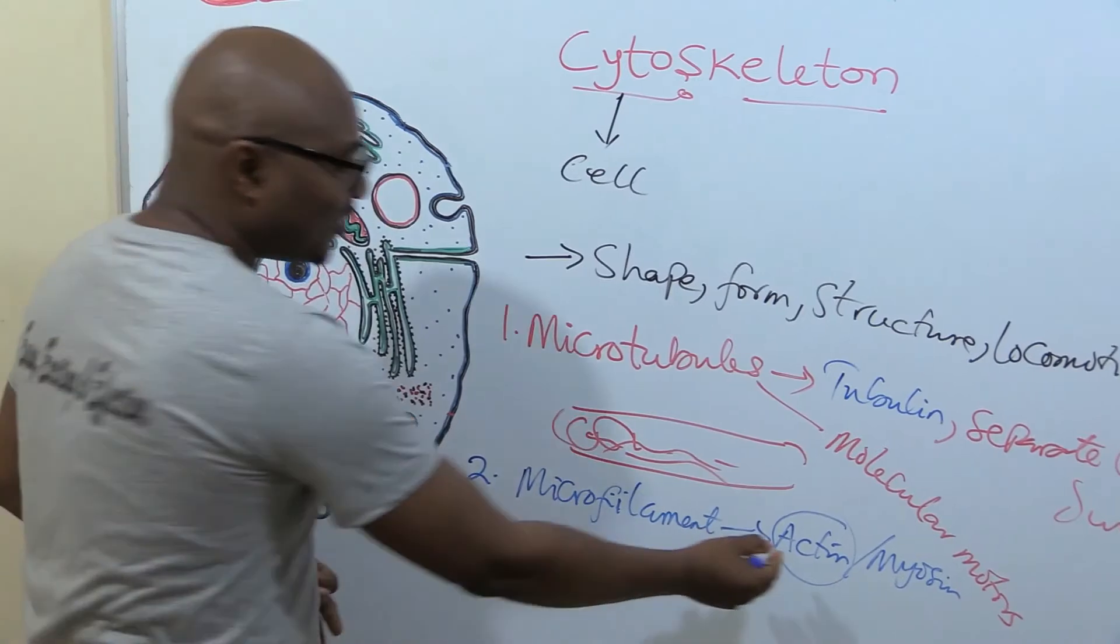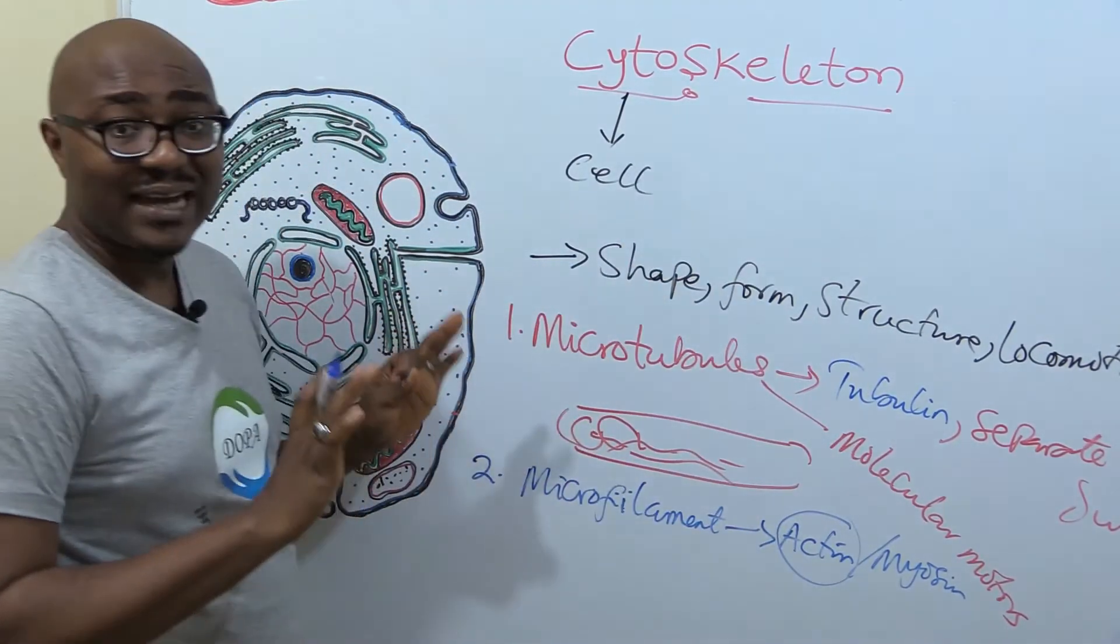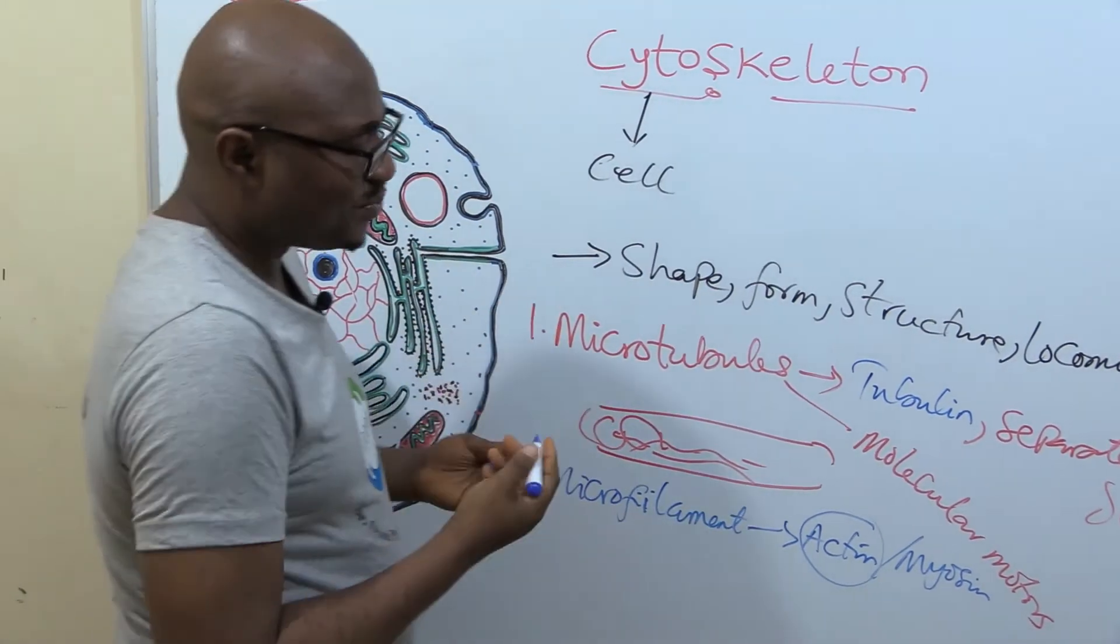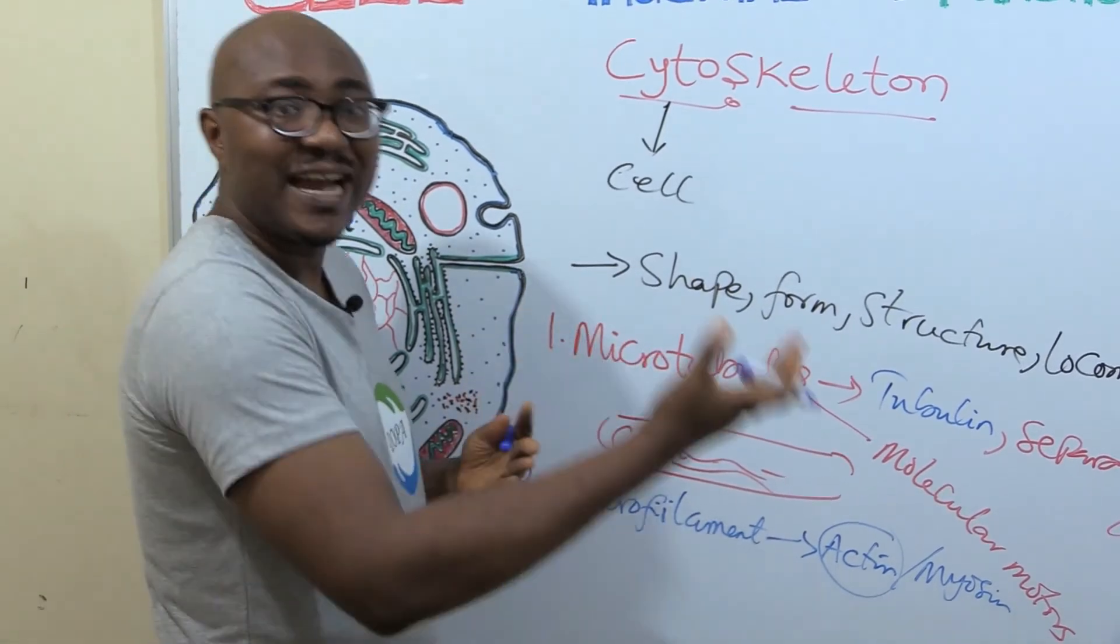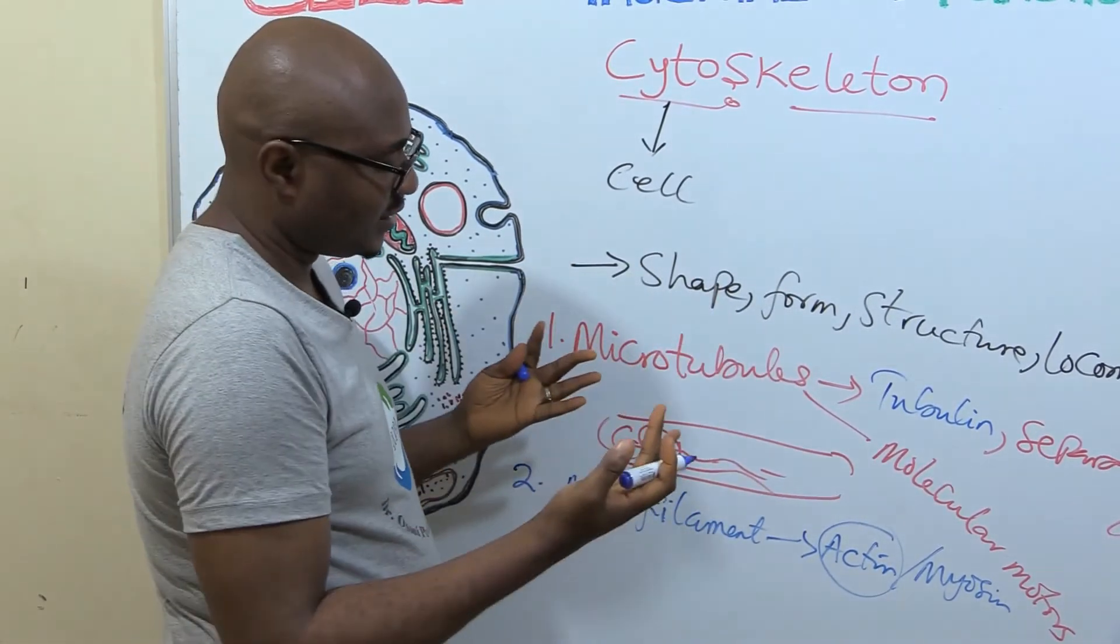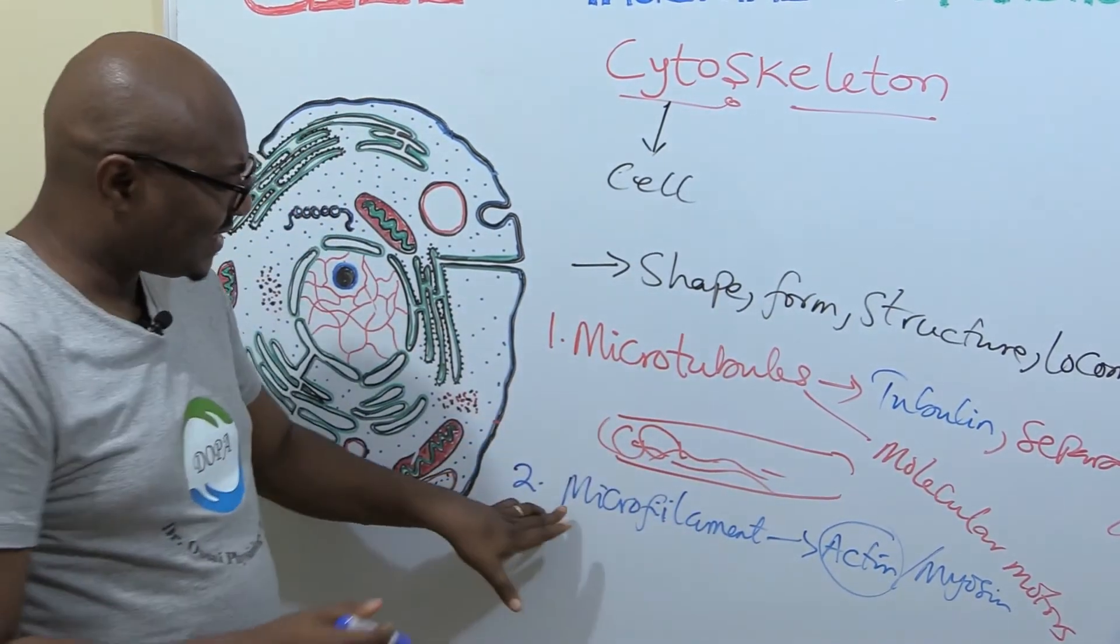So when we talk about microfilaments, they are usually referring to actin. So it has the protein, G-actin or F-actin.